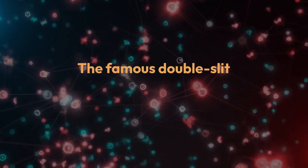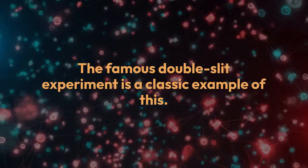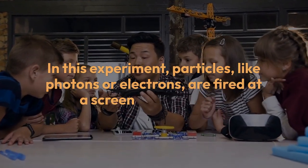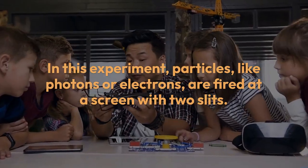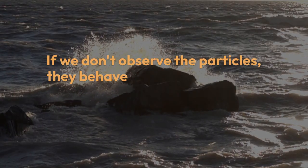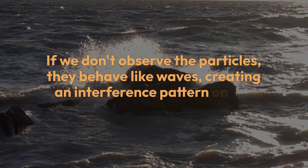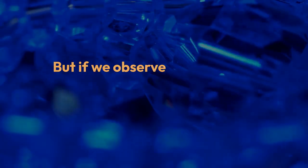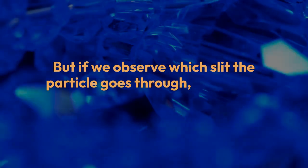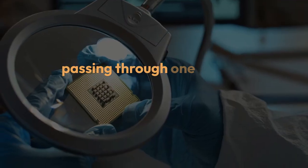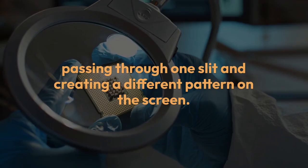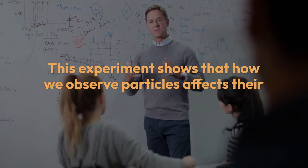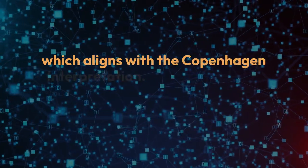The famous double-slit experiment is a classic example of this. In this experiment, particles, like photons or electrons, are fired at a screen with two slits. If we don't observe the particles, they behave like waves, creating an interference pattern on the screen, as if they pass through both slits at the same time. But if we observe which slit the particle goes through, it behaves like a particle, passing through one slit and creating a different pattern on the screen. This experiment shows that how we observe particles affects their behavior, which aligns with the Copenhagen interpretation.